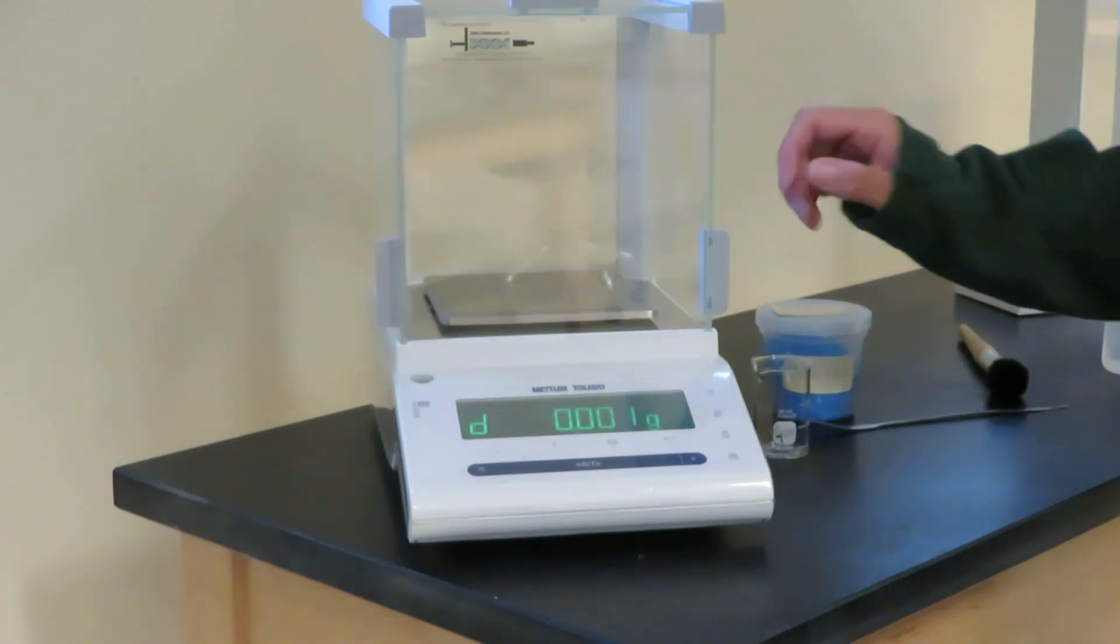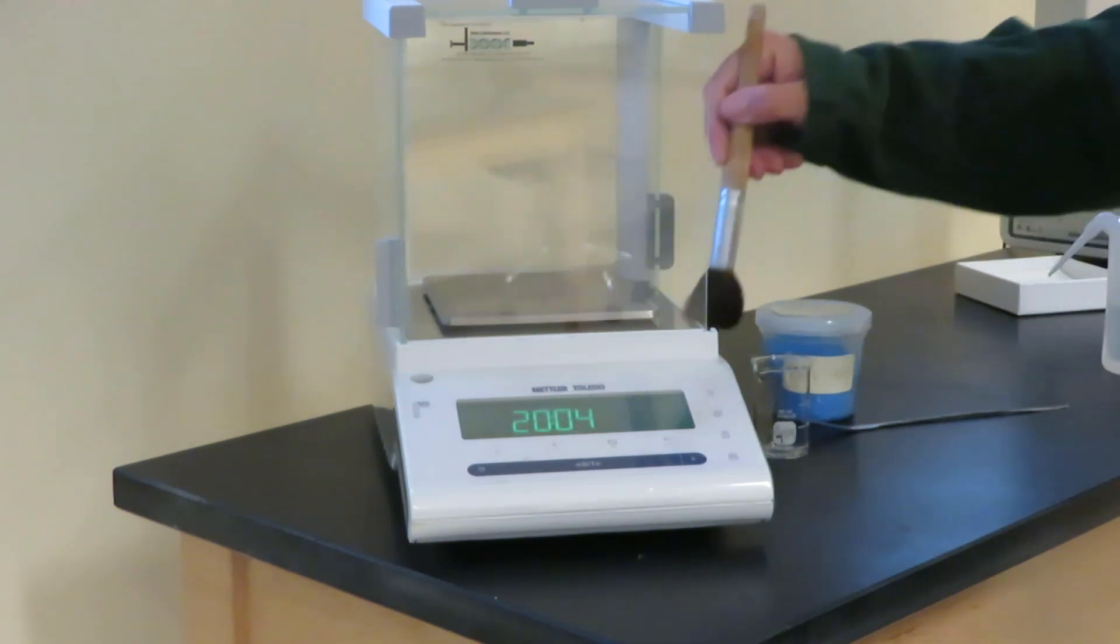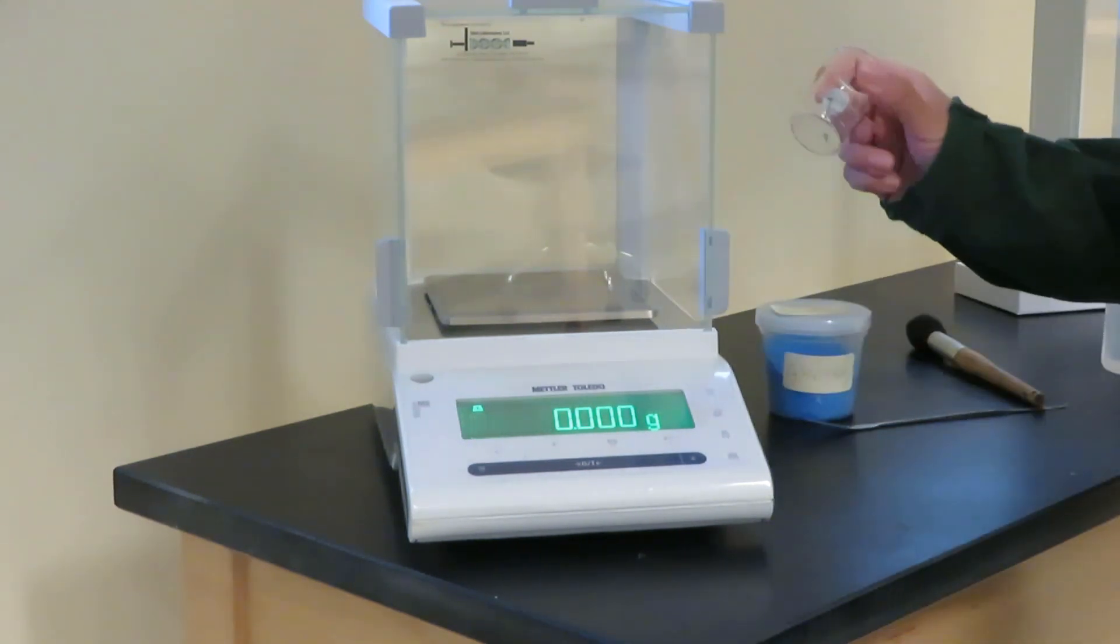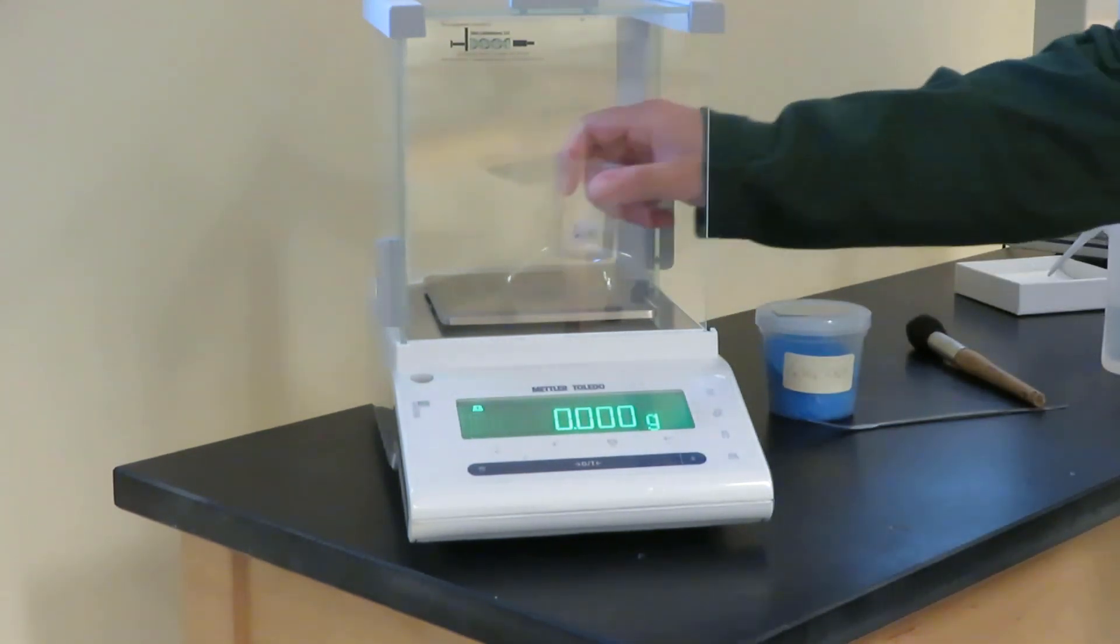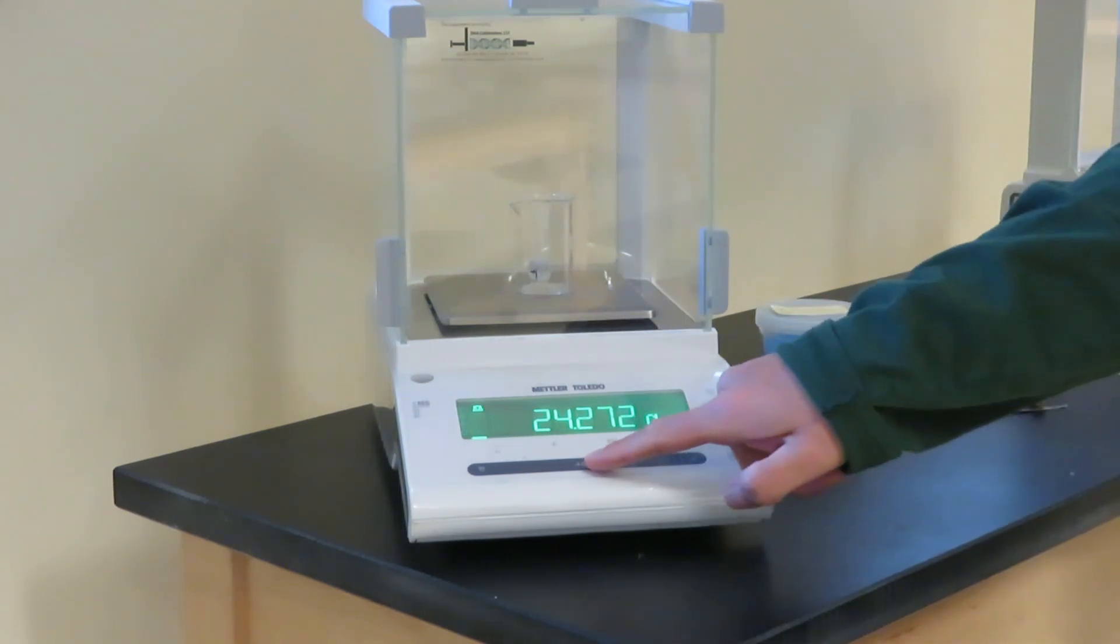What we want to do is weigh it on the balance. I'm going to make sure it's clean to start with, so I'll brush it. I'm going to weigh it into a beaker. I'll place the beaker, close the draft shield, and I'm going to tare it.